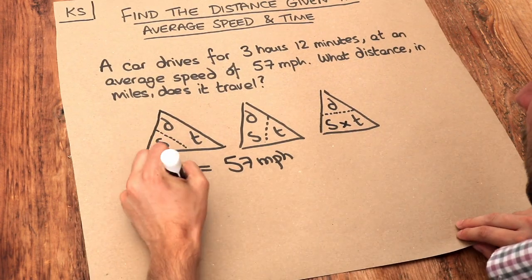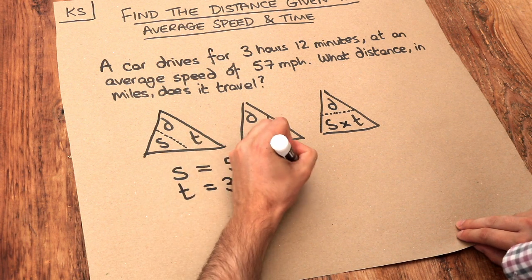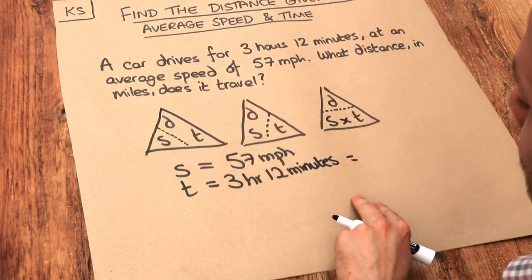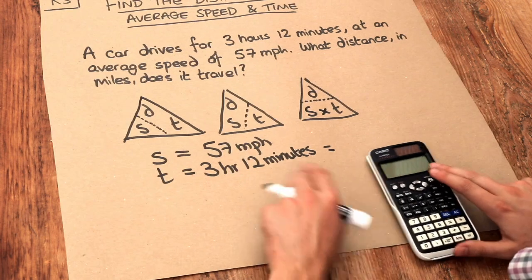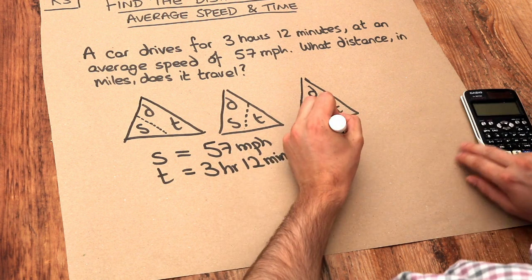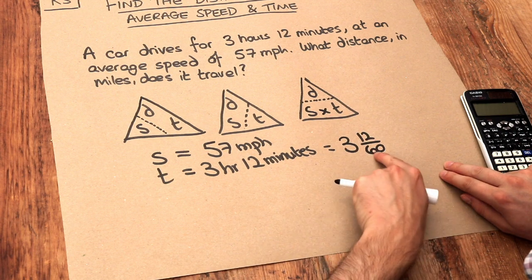So the time is 3 hours and 12 minutes. Now let's convert this to decimal form. It's not 3.12, that doesn't work. But let's think: 12 minutes is what fraction of an hour? Well, an hour is 60 minutes, so it's 3 hours and 12 sixtieths of an hour, because in one hour of 60 minutes we've got 12 of those minutes.